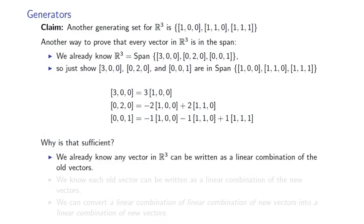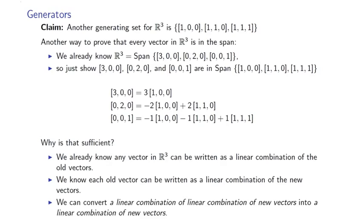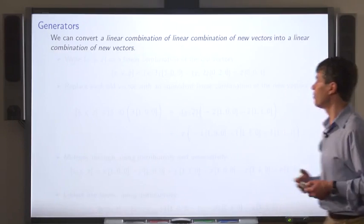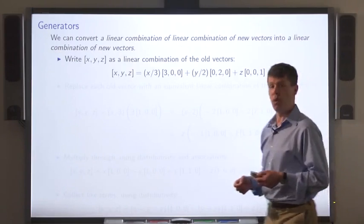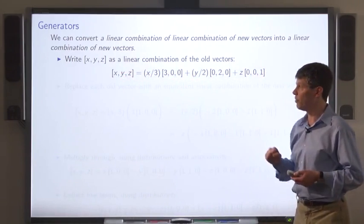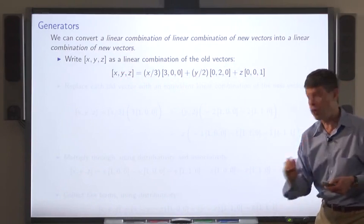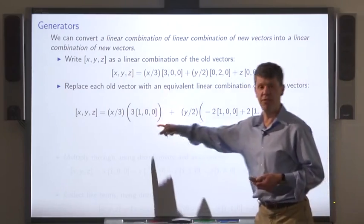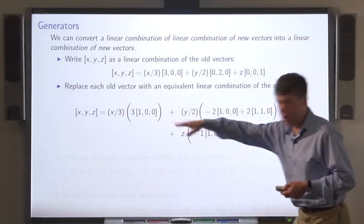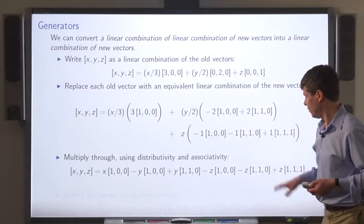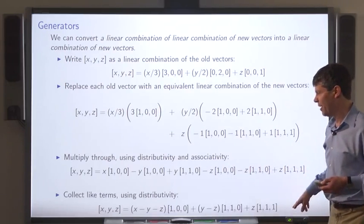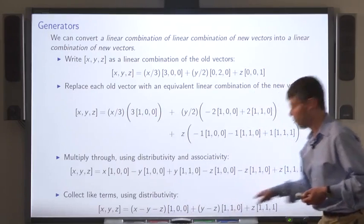Why does that do the job? We already know that any vector in R3 can be written as a linear combination of the old vectors, and we know that each of the old vectors can be written as a linear combination of the new vectors. To put these together, we use the fact that a linear combination of linear combinations can be reduced to just a linear combination. We write (x, y, z) as a linear combination of the old vectors, then replace each old vector with an equivalent linear combination — substituting from the equations on the previous slide. We multiply through using our algebraic properties, collect like terms, and end up with a linear combination in terms of the new vectors.